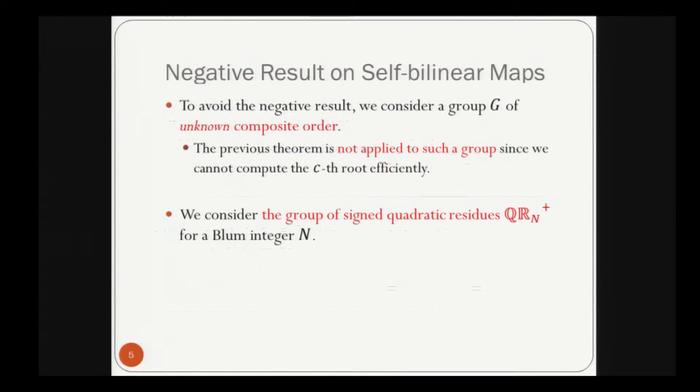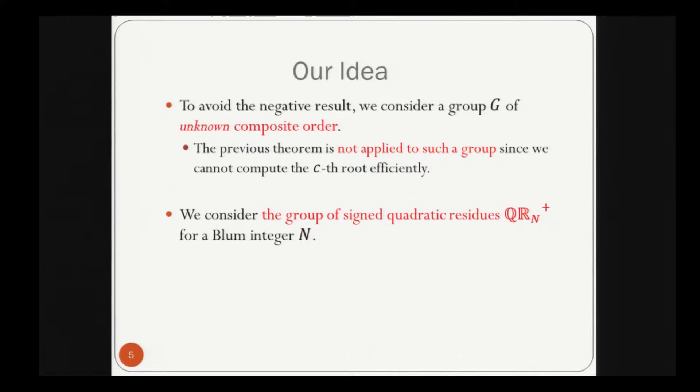Our idea is to avoid this negative result. We consider a group G of unknown composite order. Note that the previous theorem does not apply to such a group, because in the proof we computed the C-th root, but we cannot compute the C-th root efficiently on an unknown order group. Specifically, we consider the group of signed quadratic residues, QR_N^+, for Blum integer N.